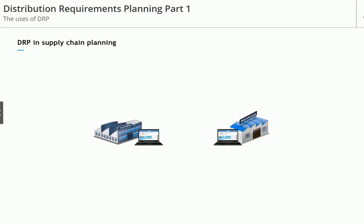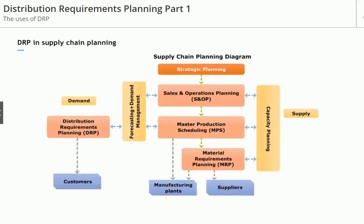In fact, DRP sends a weekly forecast to the factory, which we use to schedule production and order components.